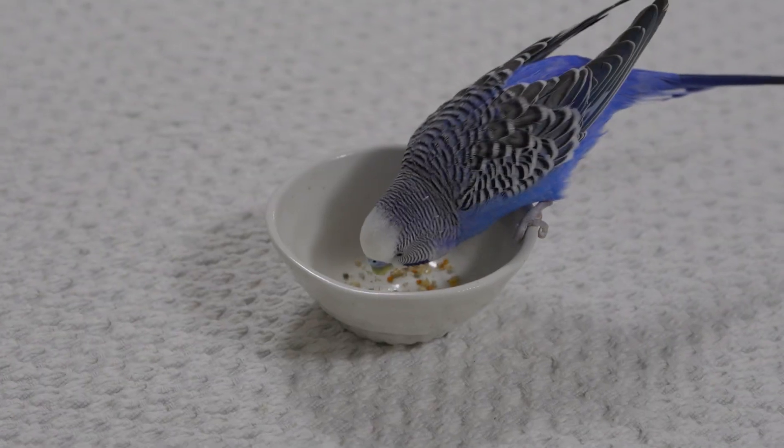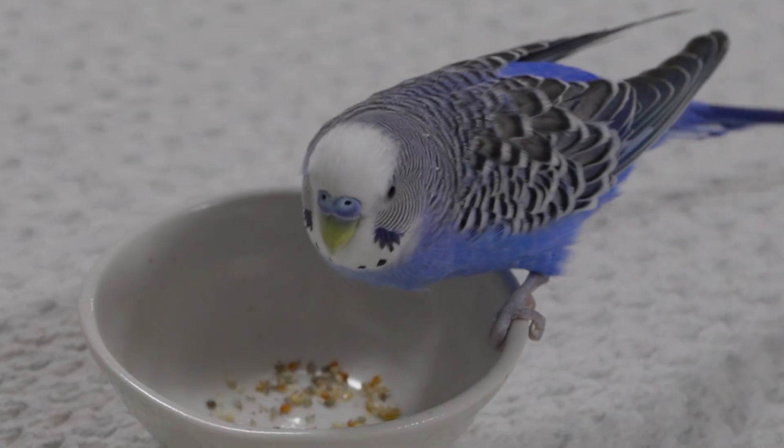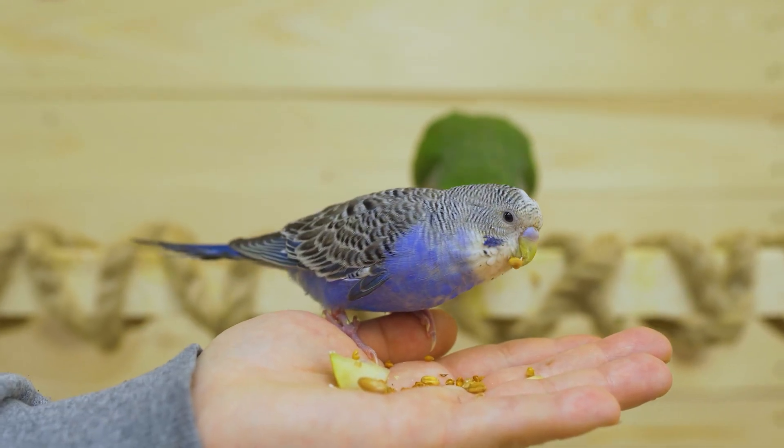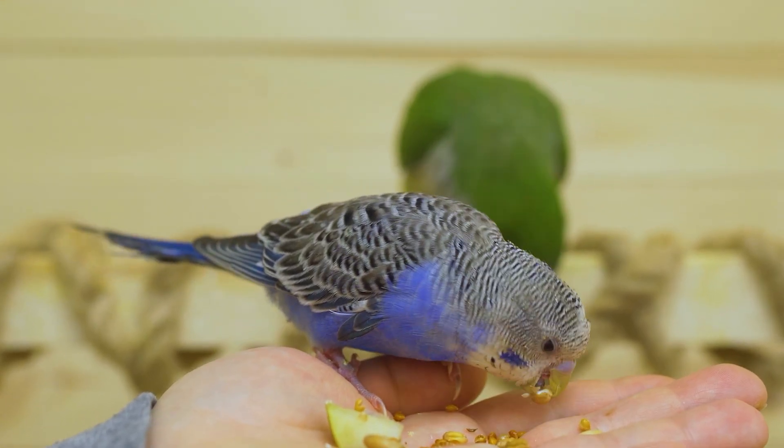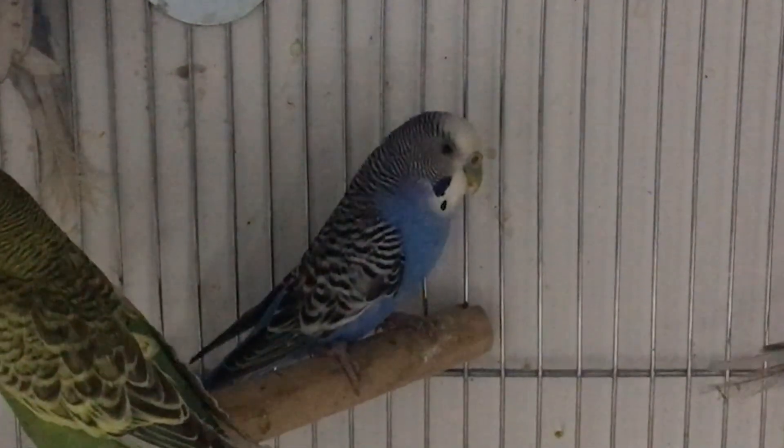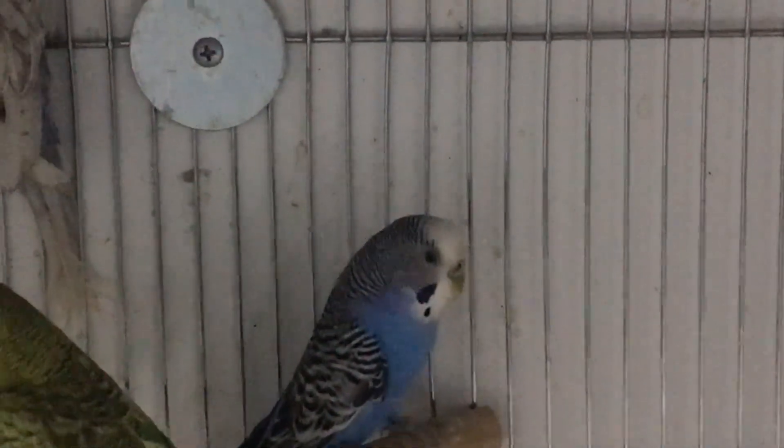It's no surprise violet budgies are jaw-dropping beautiful. Whether it's that rich plum body, the intense violet cheeks, or the way their feathers catch the light. They are crowd favorites in both pet homes and bird shows. In fact, many exhibition breeders intentionally breed cobalt budgies with that violet gene to achieve that iconic show violet look.